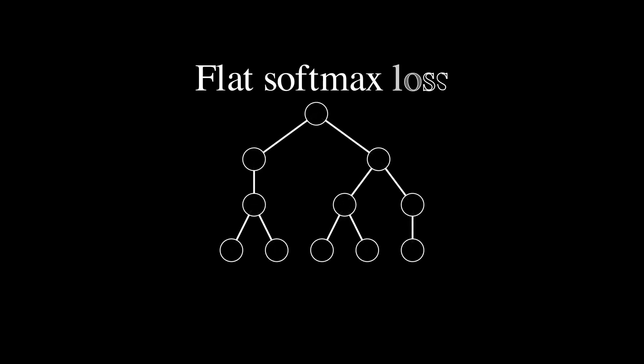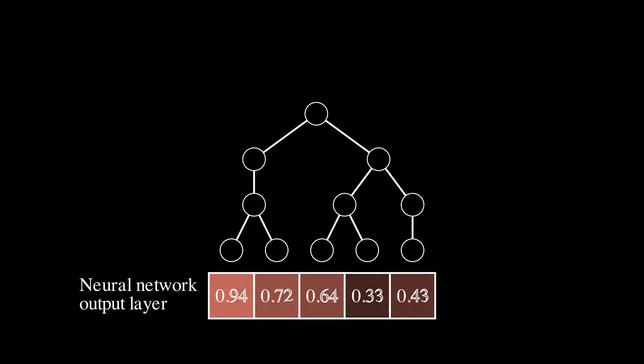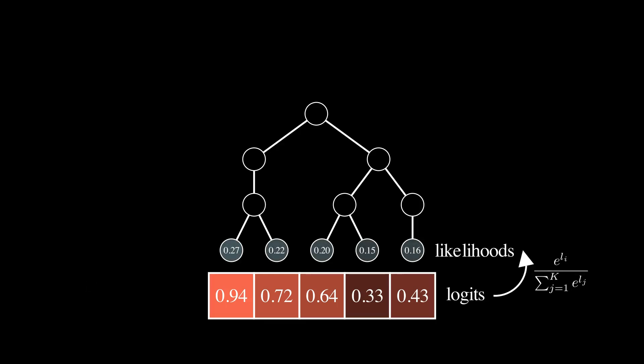The first loss we will cover is called the flat softmax loss and is computed bottom-up. In this case, the output layer has the same number of neurons as there are leaves in the tree. The neural network outputs logits, which are then transformed into likelihoods using the softmax function.